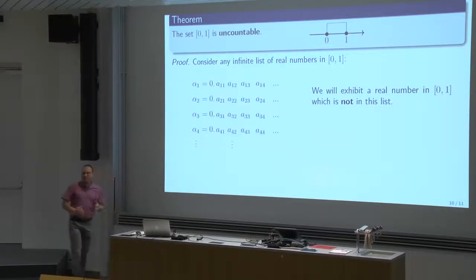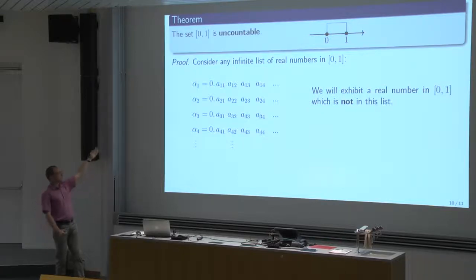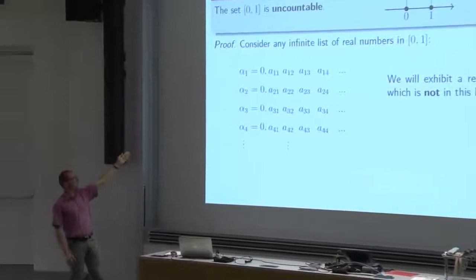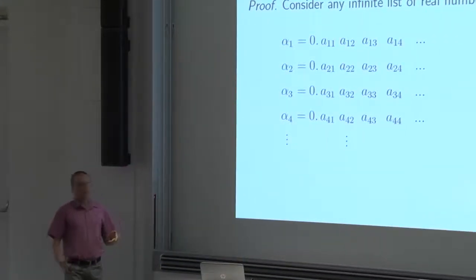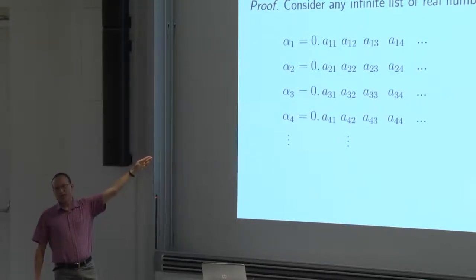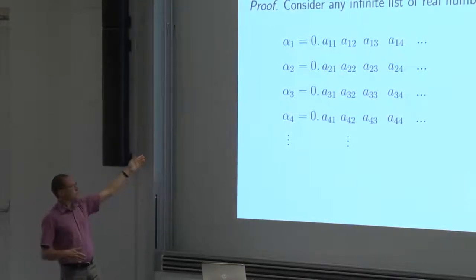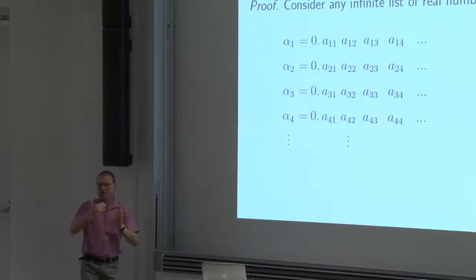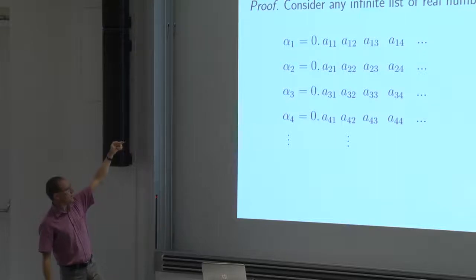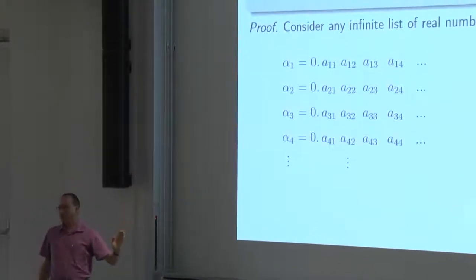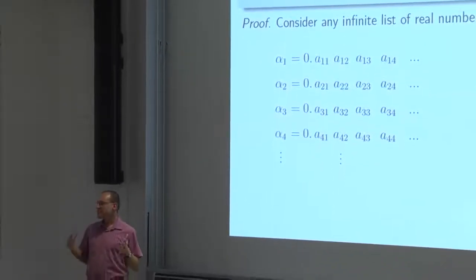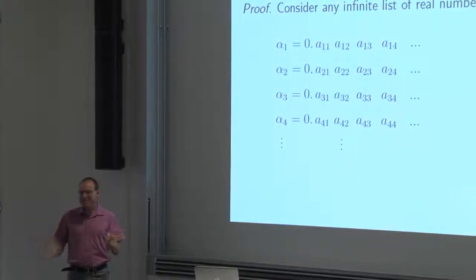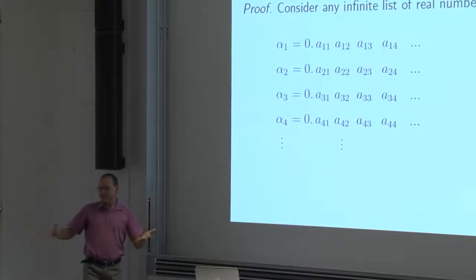To prove this we have to dig into the nature of real numbers — we have to use what real numbers are. You said that real numbers are infinite decimals. Because now they are between 0 and 1, all of them start with 0 point something. So for alpha 1 I write 0.A11, A12, A13, and so on. These are double indices — A11 means the first digit of alpha 1, A12 means the second digit of alpha 1, A34 means the fourth digit of alpha 3. It's a table of numbers, the first index indicates the row and the second index indicates the column.